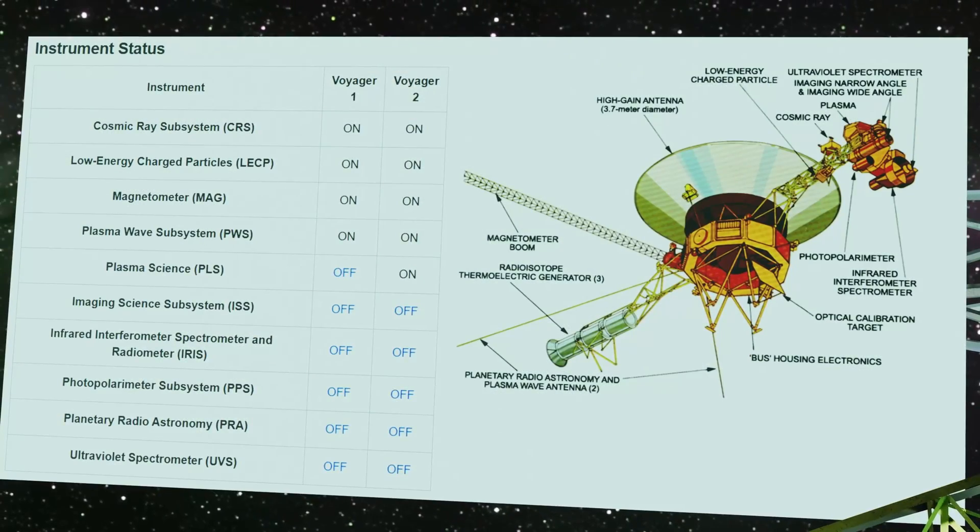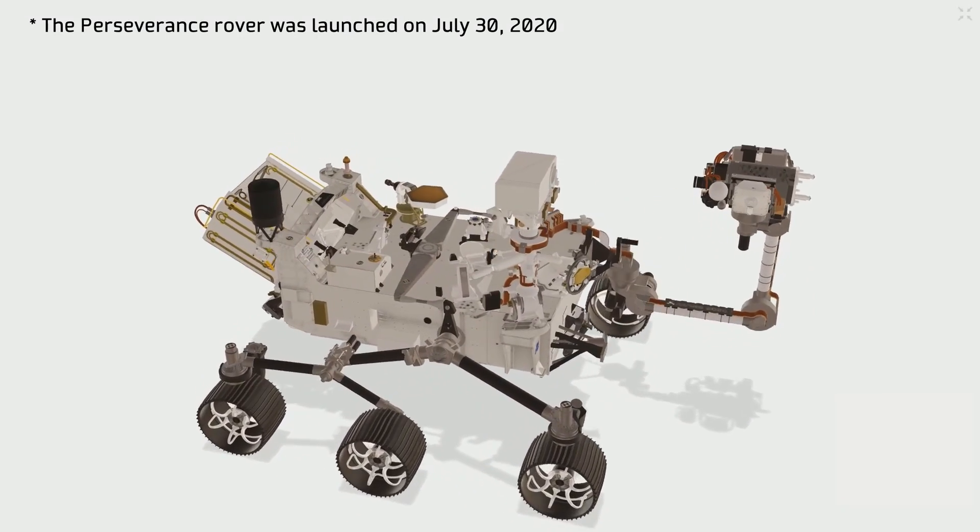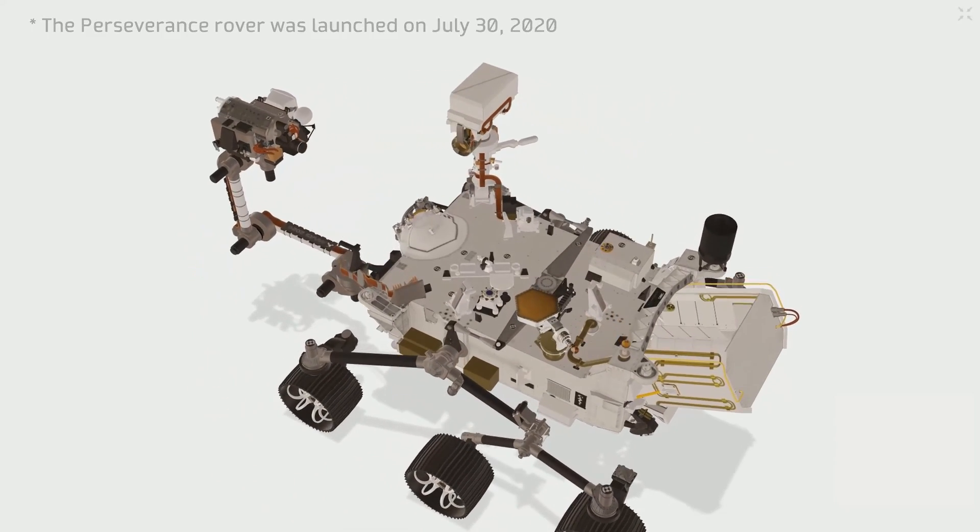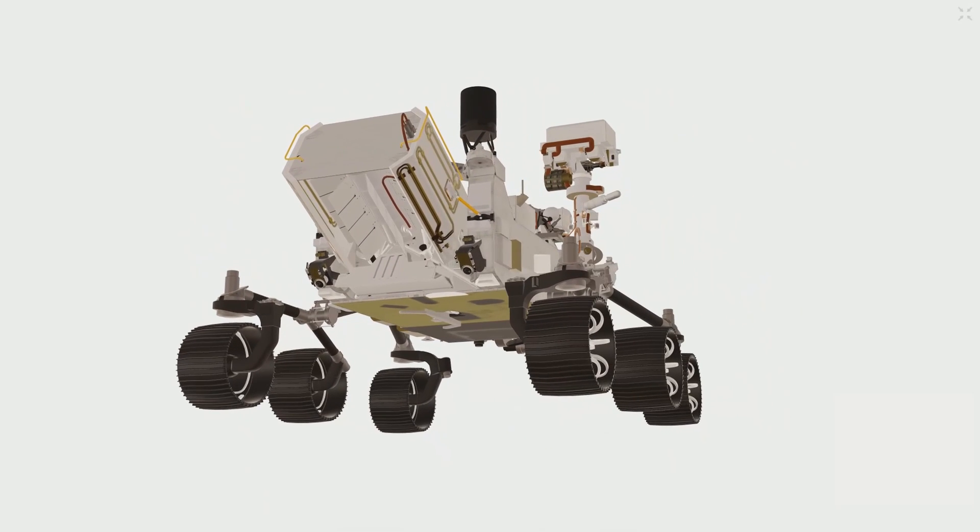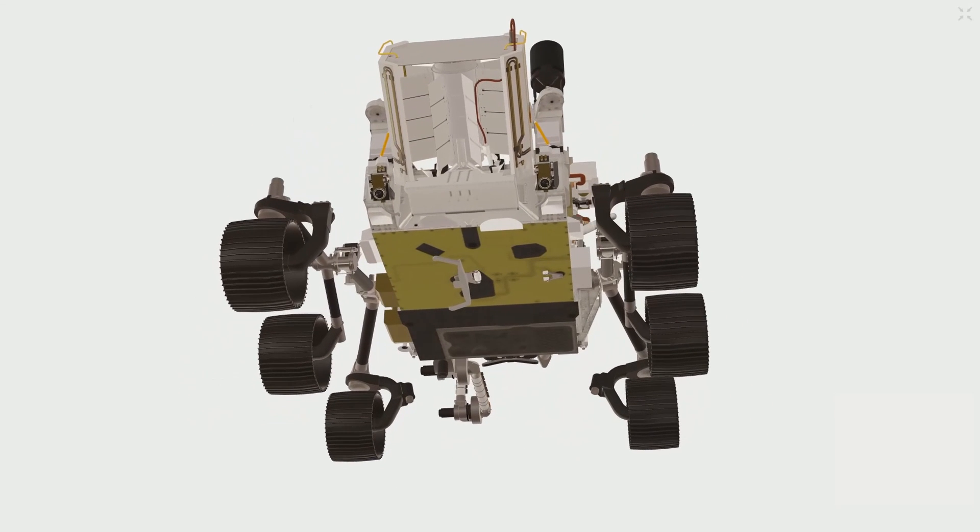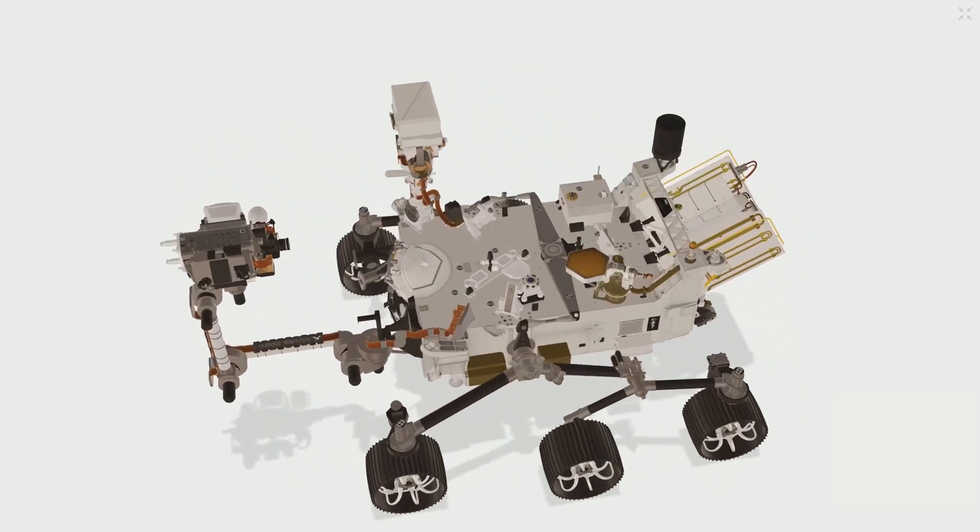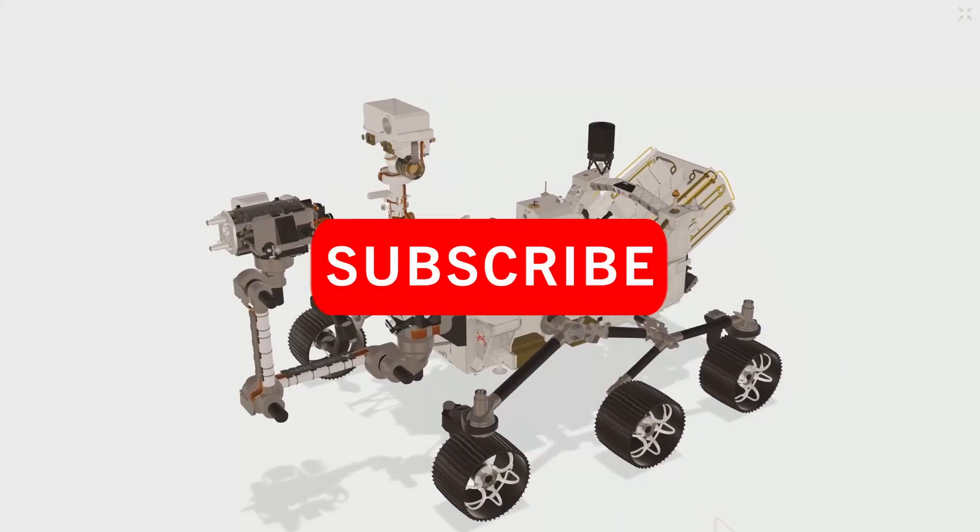Now, to give you a more recent example, the Perseverance rover will be powered by a radioisotope thermoelectric generator. If you pay attention to its design, this structure at the rear of the rover will probably look quite familiar to you. Its internal structure and the power generated is different from that of the Voyager probes, but the principle of operation is exactly the same, and this technology will probably continue to be used for many years to come.